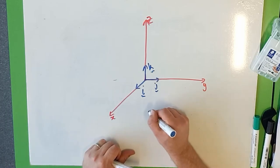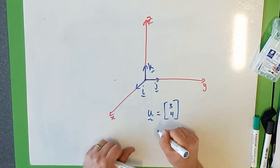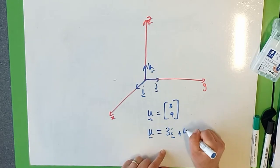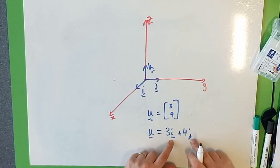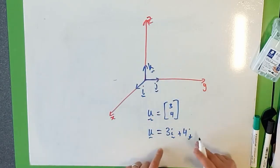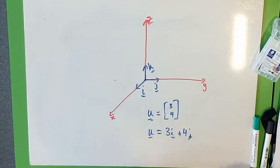So instead of writing u is equal to [3, 4] in a column, as a column vector, we can write u is equal to 3i plus 4j. So by using these as unit vectors, I'm just scalar multiplying them out, because I want to go 3 in the x direction, so 3 times i, and 4 in the j direction. And if you wanted to add a k component, you could, if it had that in the column vector, but using the i, j, k notation is quite easy to do.